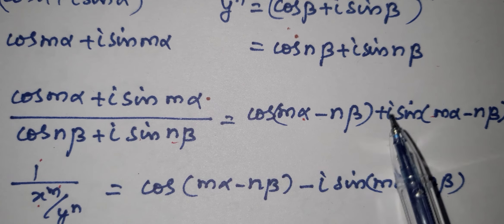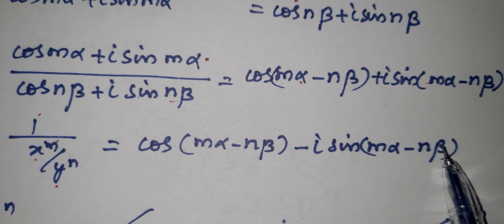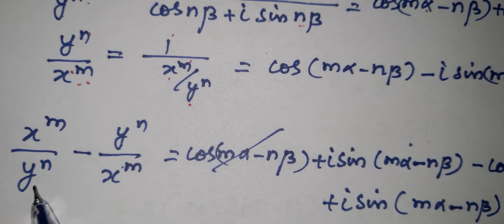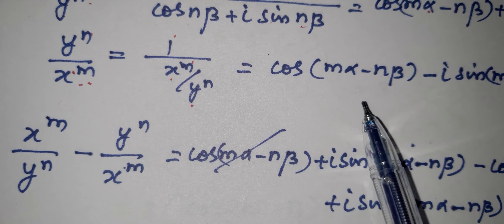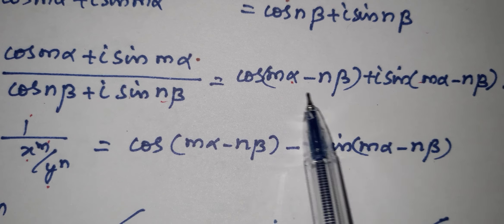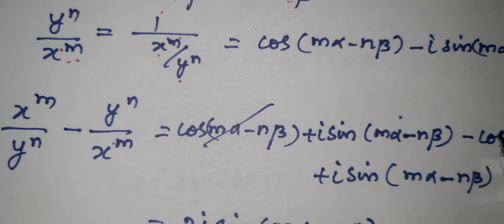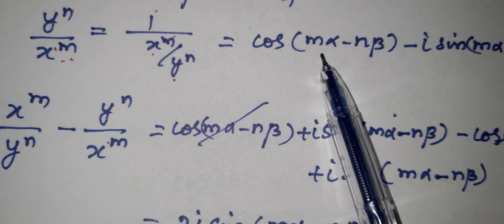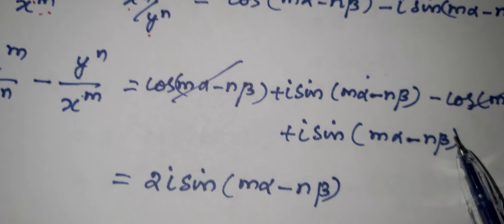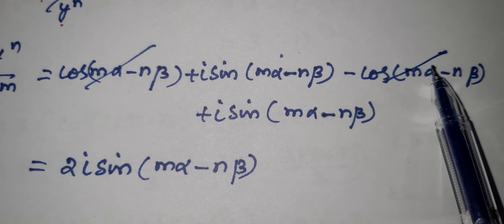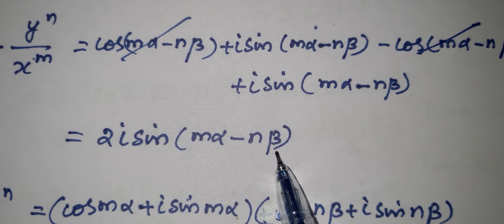Now, xᴹ/yᴺ minus yᴺ/xᴹ: taking the two values, the cosine terms cancel (minus and plus cancel), and we are left with 2i·sin(Mα−Nβ). This completes the third subdivision.